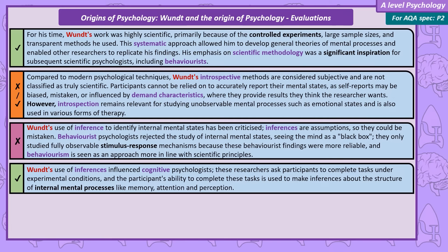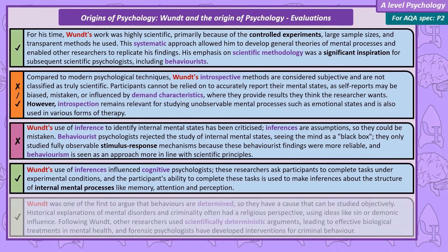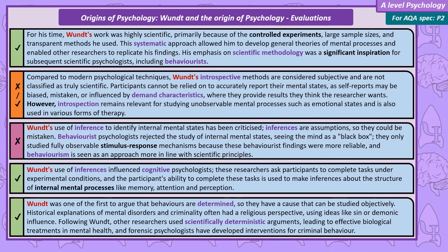By taking a scientific approach to psychological research, Wundt was one of the first to argue that behaviours have a cause — so are determined — and these causes can be studied objectively. Historical explanations of mental disorders and criminality often had a religious perspective, using ideas like sin or demonic influence. Following on from Wundt, scientifically determined approaches to mental health have led to effective biological treatments, and forensic psychology is used to understand and change the behaviour of criminals.